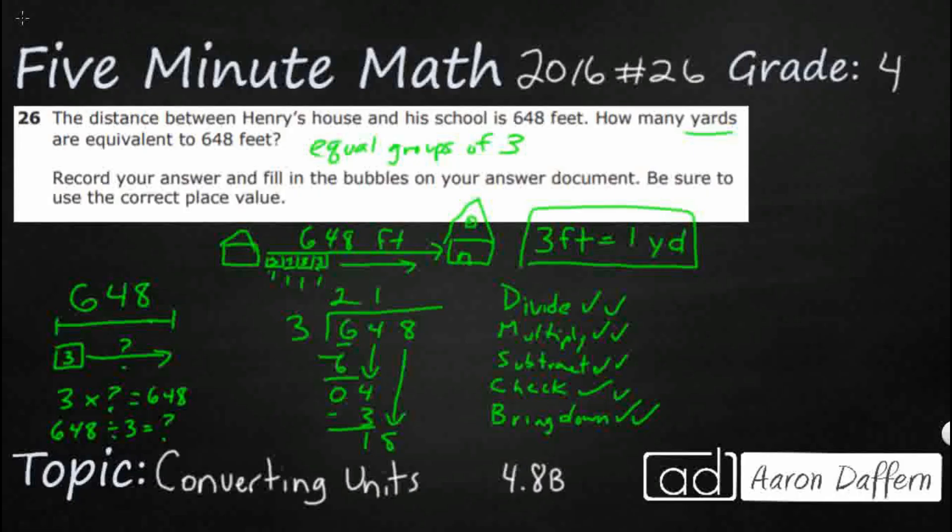And then now we can bring down our 8. That's going to go in evenly. So divide one more time. 3 goes into 18, 6 times. 6 times 3 is 18. That's going to be nice. Subtract. Nothing left. 0 is definitely smaller than 3. There's nothing left to bring down. So that's my answer, 216.